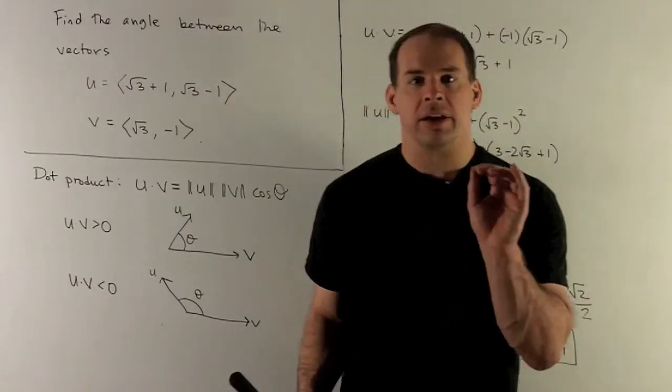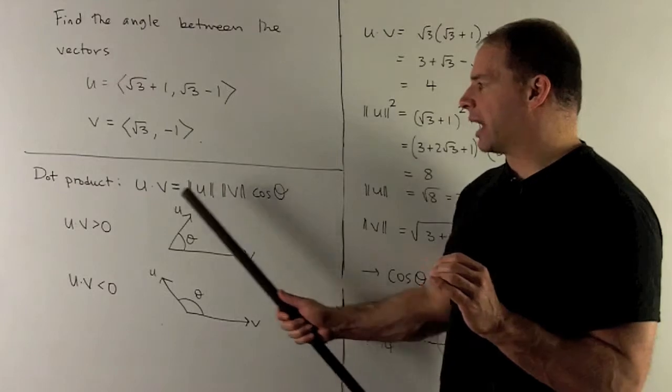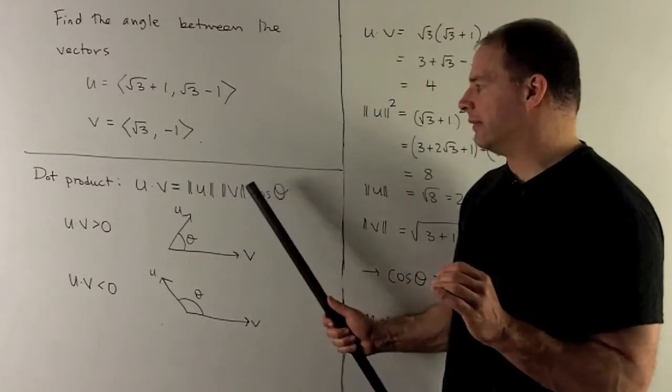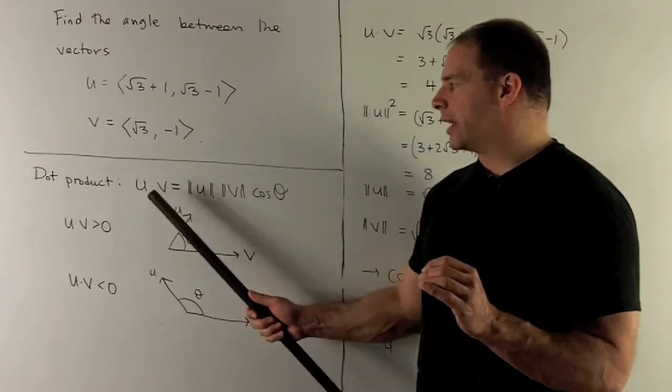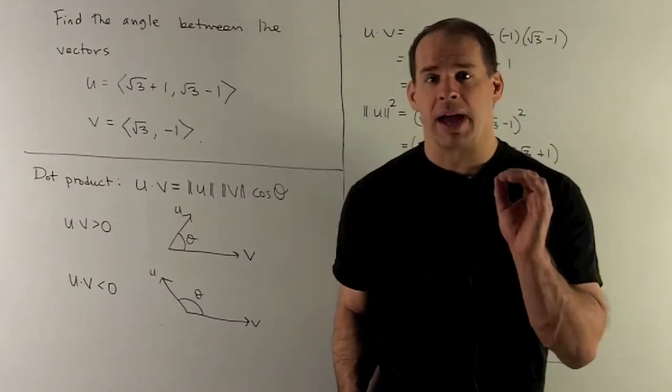Now, the idea here is we can isolate cosine theta. I just divide both sides by length of u, length of v. So all I need to do then is find these three items: I get my cosine and then I get my angle.